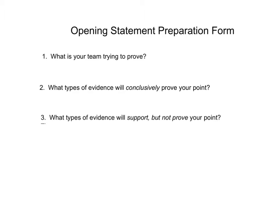So number two says, what types of evidence will conclusively prove your point? And it has the word 'types' in it. It doesn't say what evidence will conclusively prove — it says what types of evidence. Which means this is a question about, in general, what kinds of evidence do you go looking for whenever you're trying to decide whether a change is chemical or physical? And the answer to this question is really in the notes I gave you on chemical and physical changes.